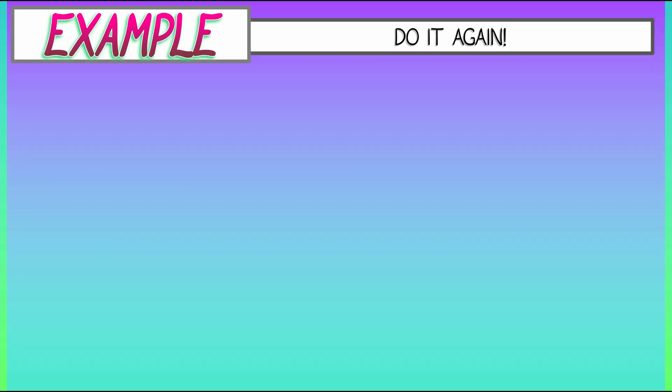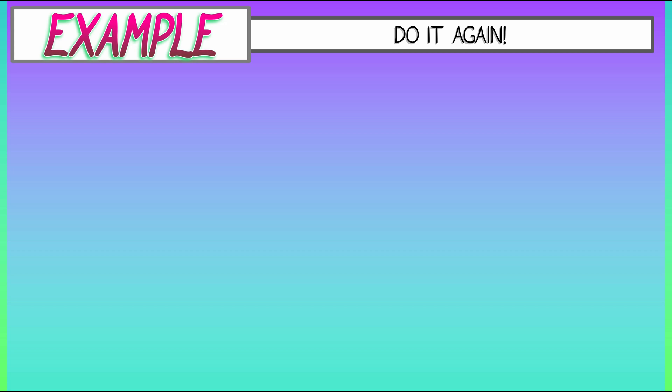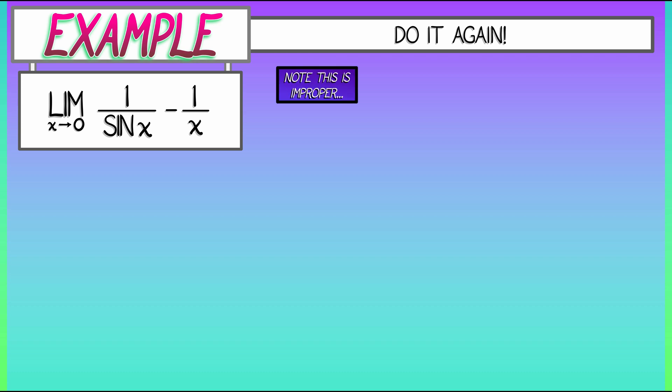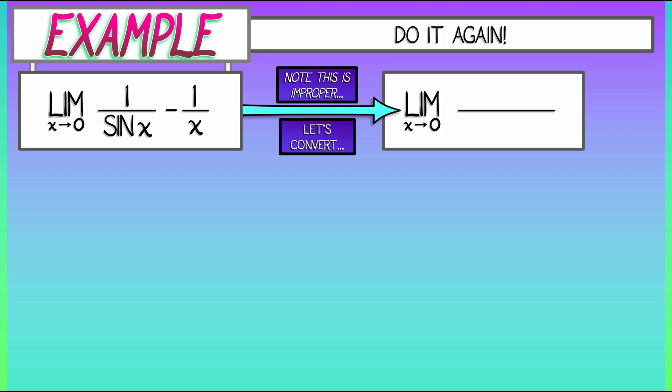So, let's do it again. Let's consider a slightly different improper limit. The limit as x goes to zero of one over sine of x minus one over x. This is a classic. It's improper because it gives you something in the form infinity minus infinity, which doesn't really make any sense. So, what we're going to do is convert this to a form to which L'Hopital's rule applies. I'm going to put this over a common denominator. That common denominator is x times sine of x. And then the numerator becomes, through cross multiplication, x minus sine of x.